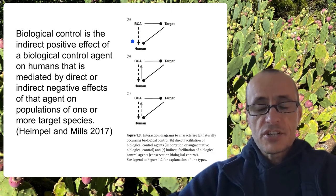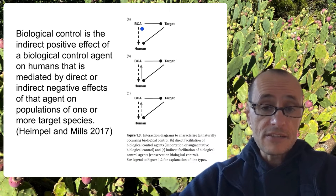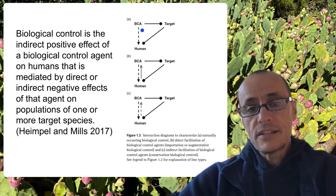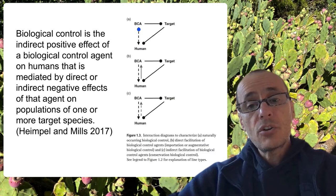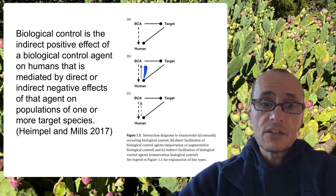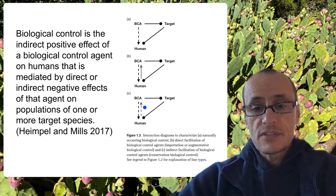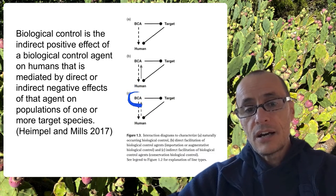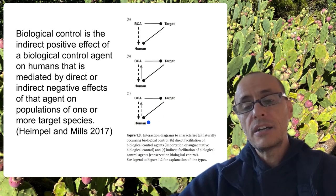The nice thing about this definition is that it's broad enough to incorporate biological control agents that might not really be considered living, like viruses, and also naturally occurring biological control. This is not necessarily the intentional release or manipulation of the biocontrol agent, but it could incorporate things like modifying the environment — part of conservation biological control — making the environment more hospitable to naturally occurring predators, parasites, and pathogens that allow them to have an effect on the target pest species.